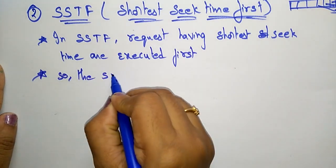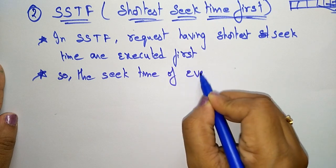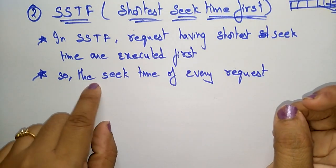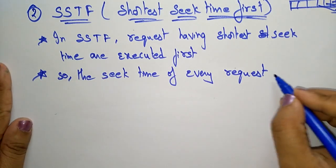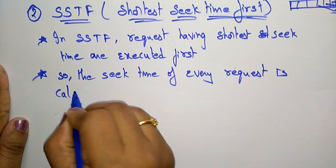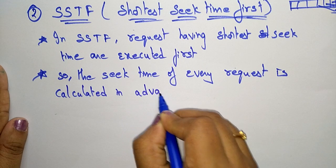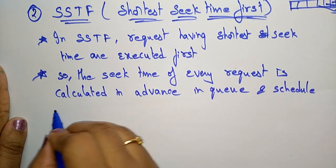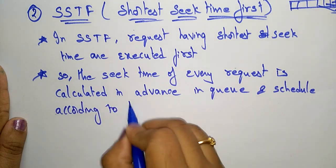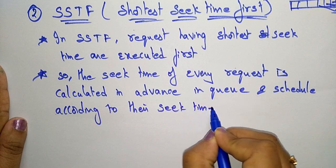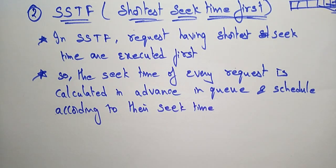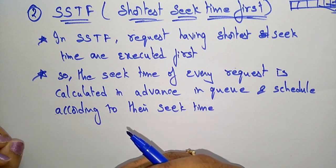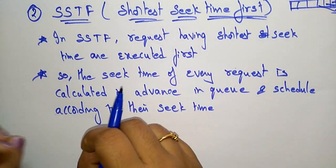The seek time of every request is calculated in advance. Before placing requests in the queue, we have to calculate the seek time of every request — whatever track numbers the I/O is requesting. The seek time means the time taken for the arm to reach the desired position.